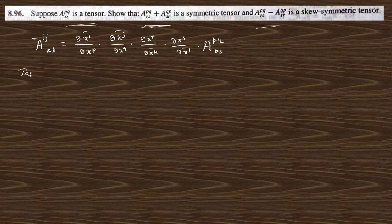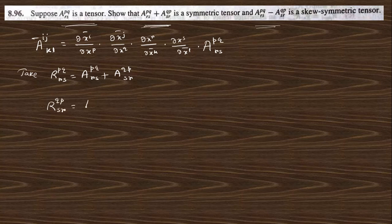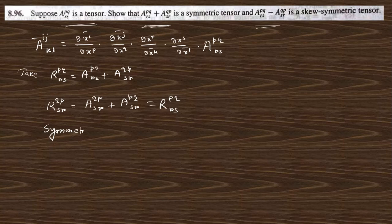Now take R_pqrs, which is nothing but the summation of A_pqrs plus A_qpsr. If we transform — that is, p and q interchange, and r and s interchange — just replacing, we get this, and this will be the same as the original. So you can see these two are the same, so this will be R_pqrs, and this shows symmetry.